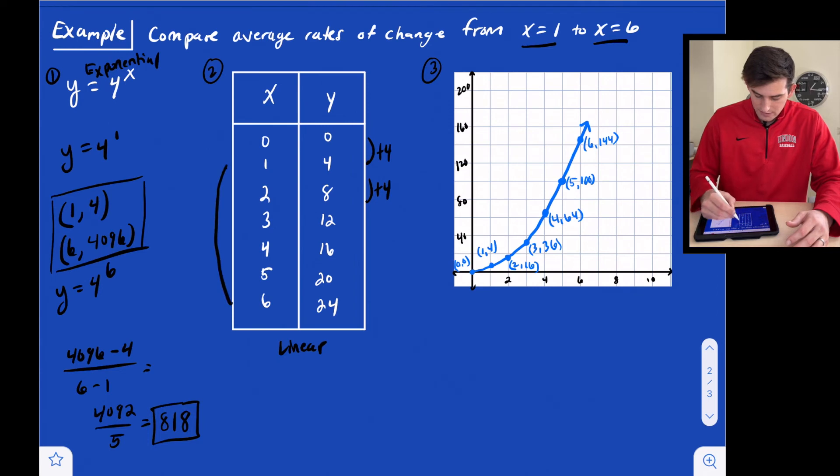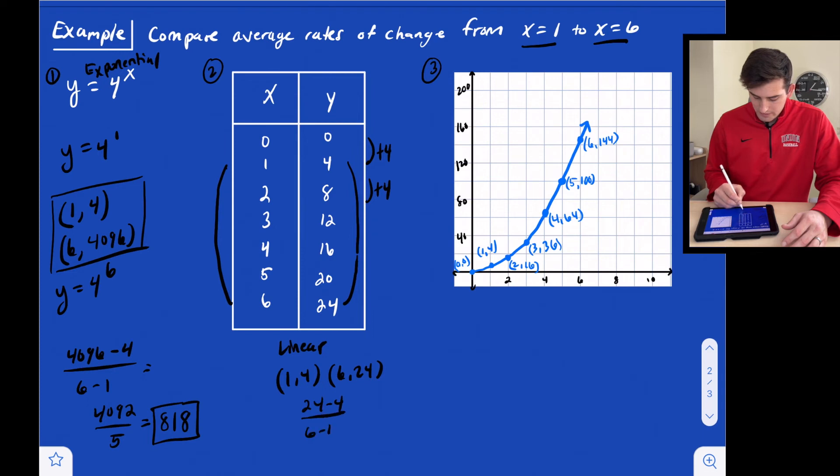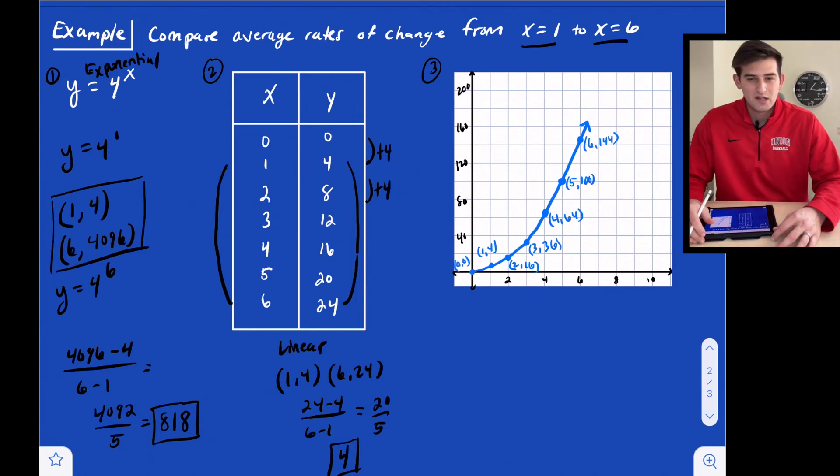Our average rate of change from 1 to 6, we have 1 comma 4 and we have 6 comma 24. So now we just do 24 minus 4 divided by 6 minus 1. 20 over 5, and we get an average rate of change of 4. And we know that's not really an average rate of change because it's linear. So it's a constant rate of change.